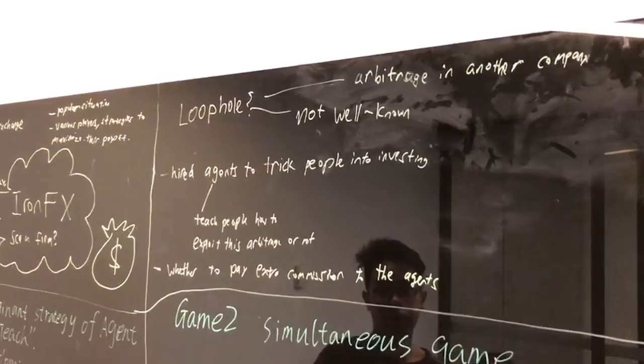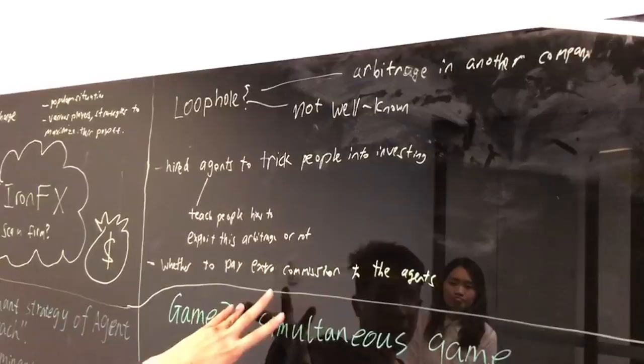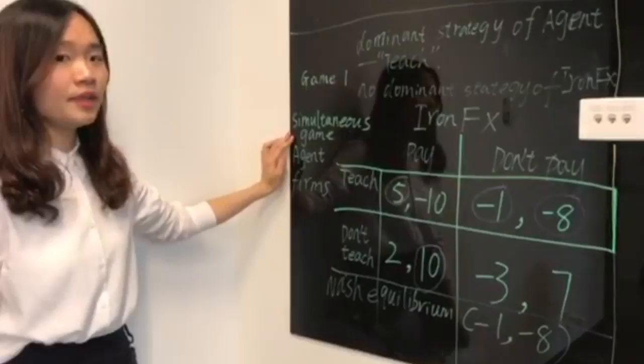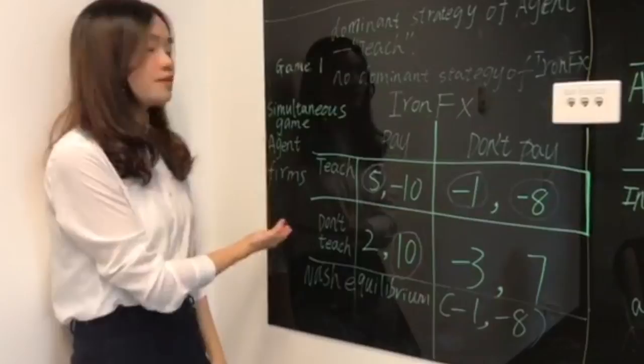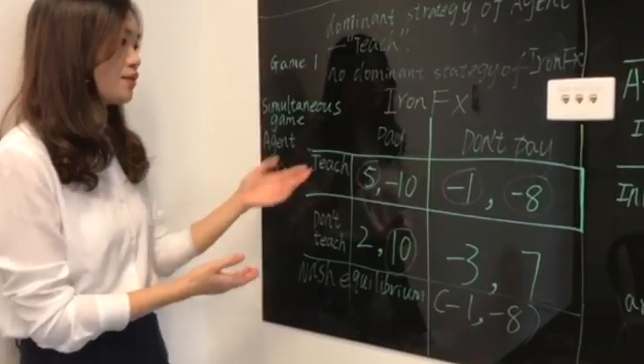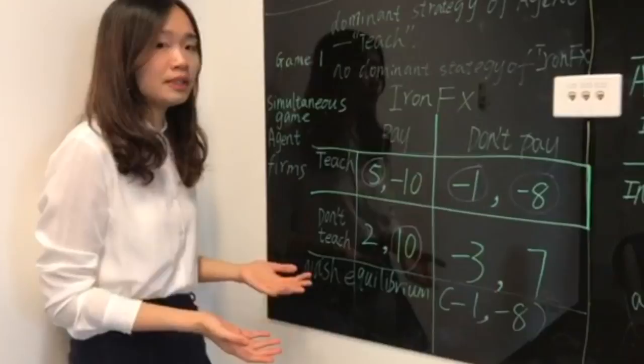Their strategy is to decide whether they want to pay extra commission to them. Game one is a simultaneous game. In this game, there is an interest conflict between the agent firm and the INFX firm, since the agent firm gets the commission from the INFX firm by teaching customers how to earn more money. Therefore, it attracts a lot of investors in the market.